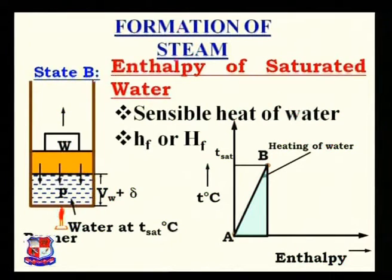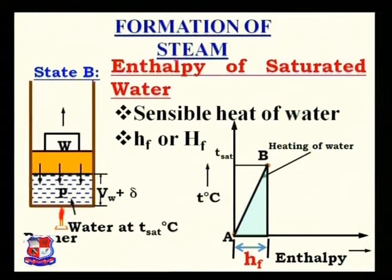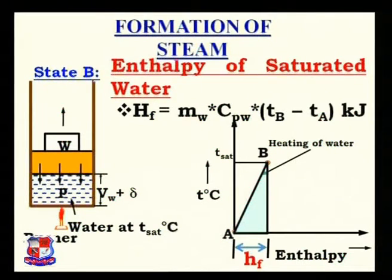It is called sensible heat because when we supply heat to water at 0°C, we can sense the temperature of water increasing — we can measure it increasing from 0°C to 10°, 20°, 30°, up to the boiling point temperature. It is denoted by the symbol small hf or capital Hf. On the temperature-enthalpy diagram, it is represented by the distance between point A and point B. Hf can be calculated as: Hf = mass of water × Cp_water × (Tb − Ta), with the answer in kilojoules.